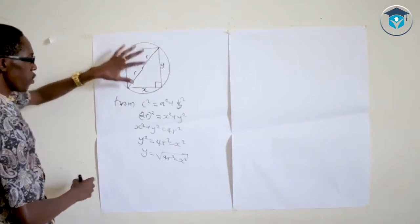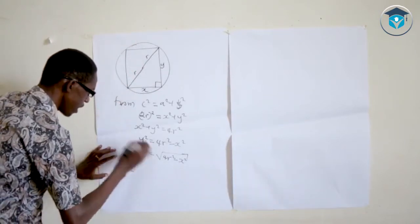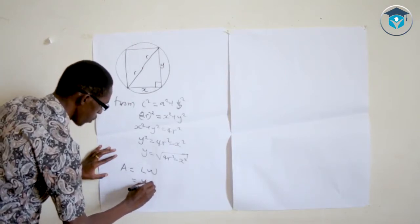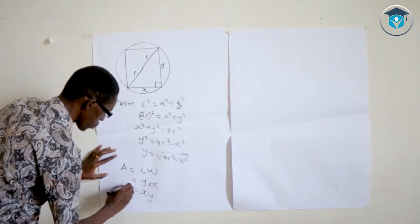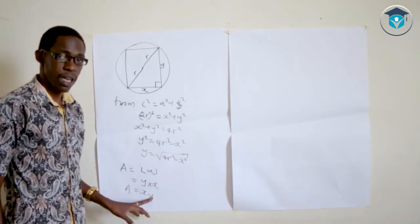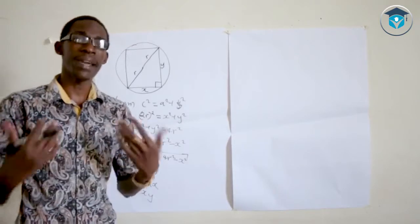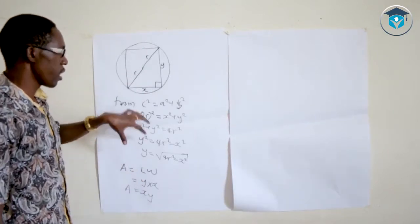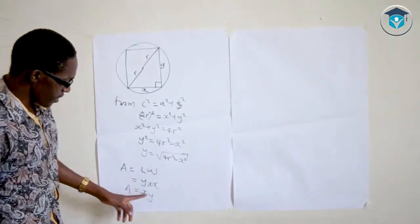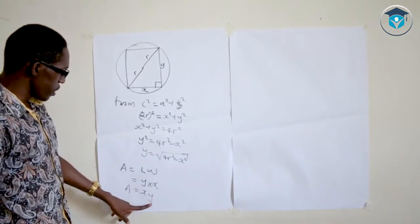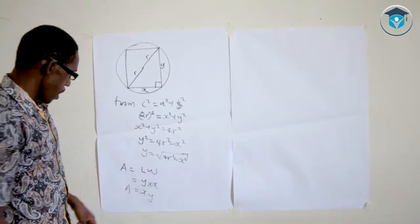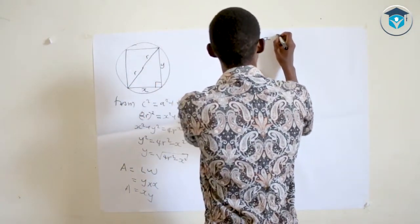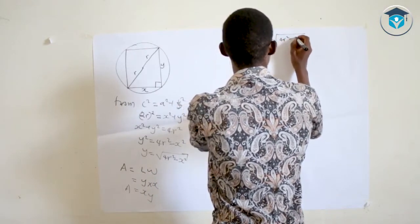The area of the rectangle is length times width. Our length is y and our width is x, giving area A = xy. We have y in terms of x, so substituting: A = x · √(4r² − x²). That is our expression for the area.